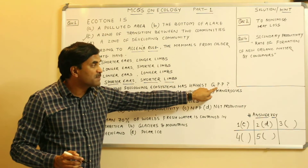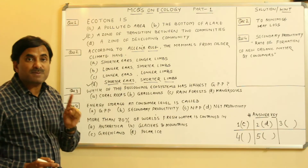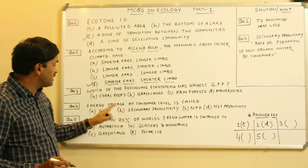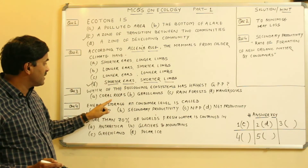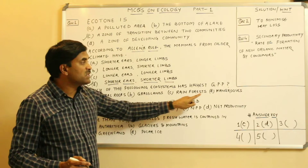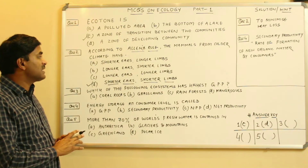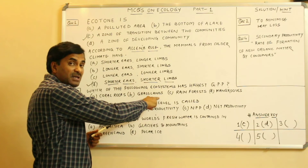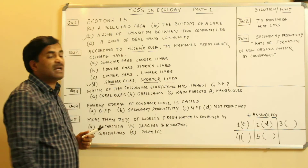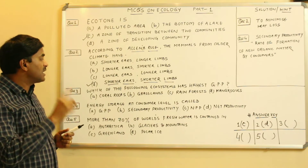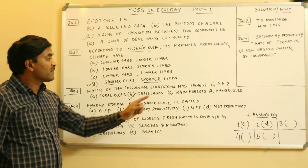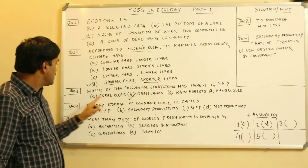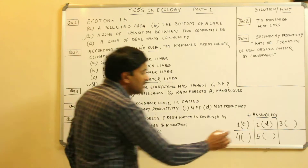The question is about which ecosystem has the highest gross primary productivity. The options include coral reefs, grasslands, rainforests, and mangroves. Students are sometimes confused between grasslands and rainforests. You should always opt for grasslands, as grasslands have more GPP compared to rainforests. Question number three has the answer B — grasslands.